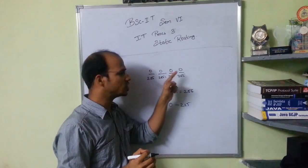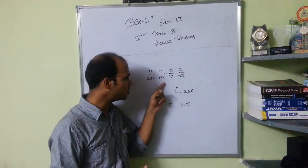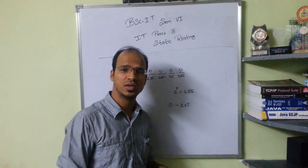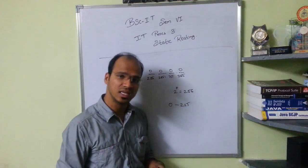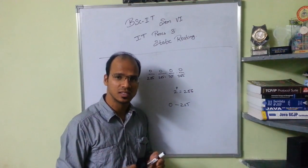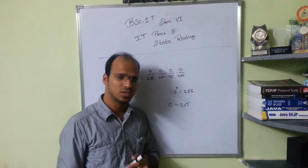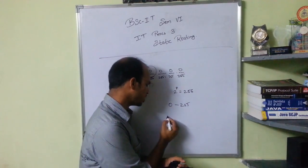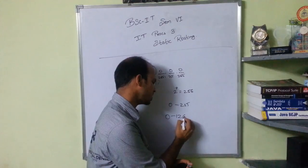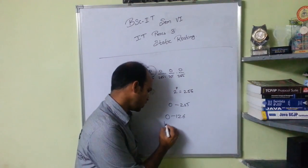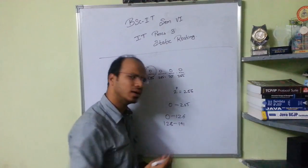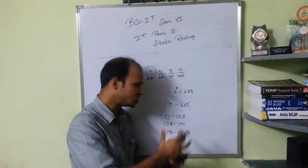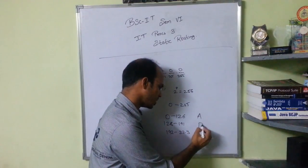The minimum IP address you can have is 0.0.0.0 and the maximum is 255.255.255.255. Now if you talk about classful addressing, you have Class A, Class B, Class C, Class D, and Class E. Each class deals with some IPs depending on the first octet. If your first octet falls between 0 to 126, it's Class A; 128 to 191 is Class B; and 192 to 223 is Class C.